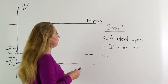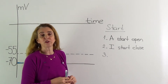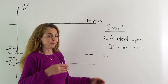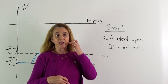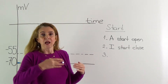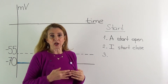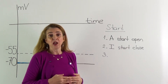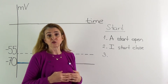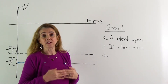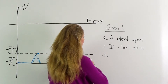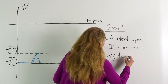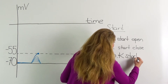The third event is happening in the voltage-gated potassium channel, which has only one gate. This gate is closed at the resting membrane potential, and when the threshold potential is reached, this gate starts to open — so the voltage-gated potassium channel gate starts to open.